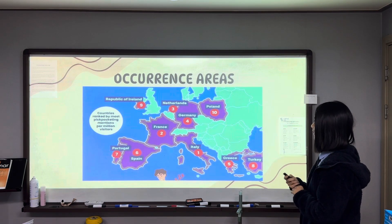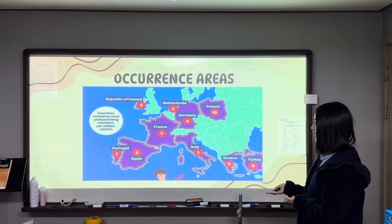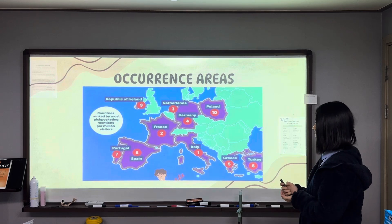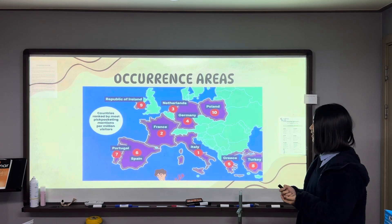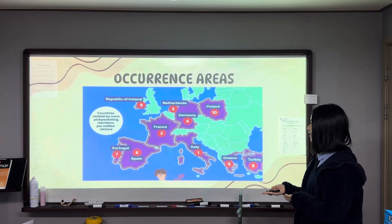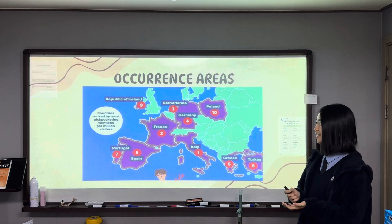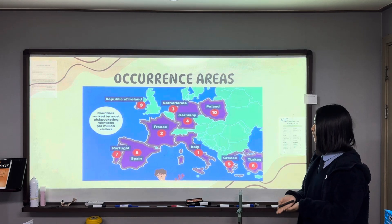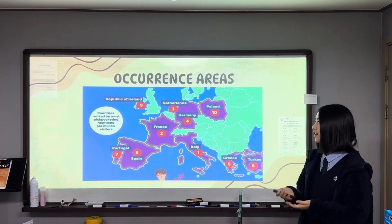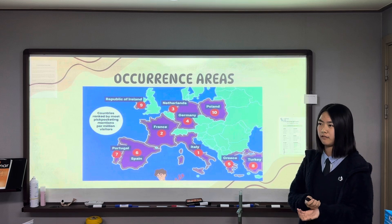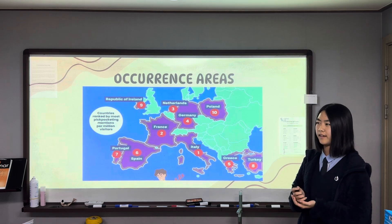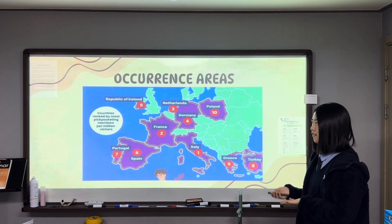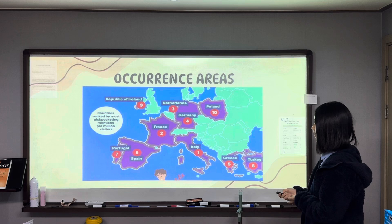Next, the occurrence areas. Let's look at a picture. We can see that Italy has the most pickpocketing incidents, despite Spain and France having a lot of British travelers. We can also see that Western Europe has a lot of pickpocketing.